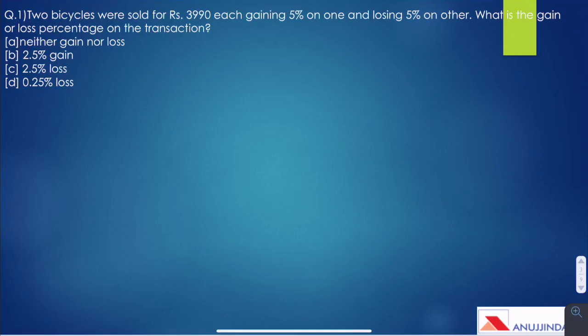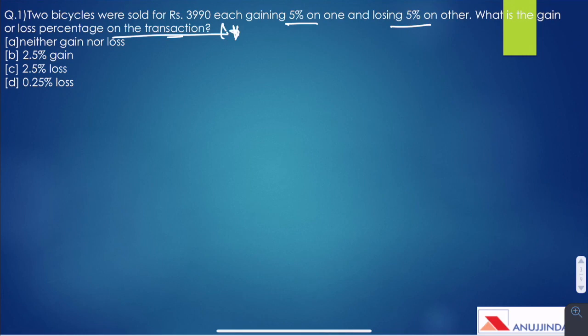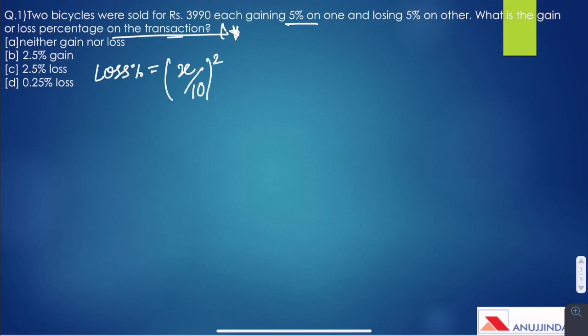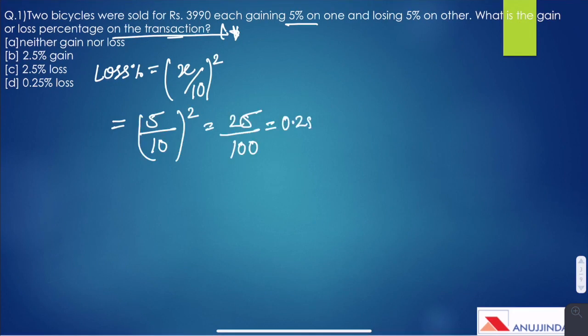Question 1: Two bicycles were sold for rupees 3,990 each, gaining 5% on one and losing 5% on the other. What is the gain or loss percentage on the transaction? As discussed, if two items are sold at the same price and one incurs x% loss and the other x% profit, then overall there is a loss given by x² ÷ 100. Here x is 5, so we get 0.25% loss.